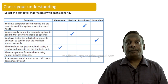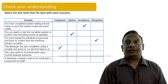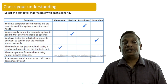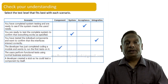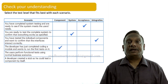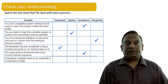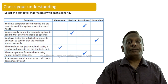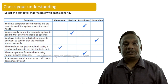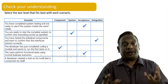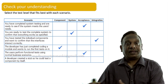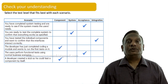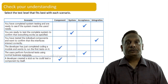Fifth scenario: users perform functional tests using normal business scenarios. Is it component, system, acceptance, or integration? Here, users performing functional tests using normal business scenarios — that is acceptance testing. Sixth scenario: a developer created a stub so they could test a component by itself, because data from another component was not yet ready. What level of testing is that? That is component level testing.